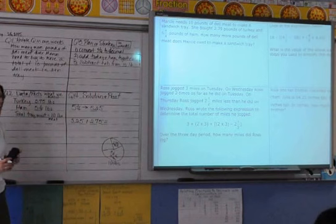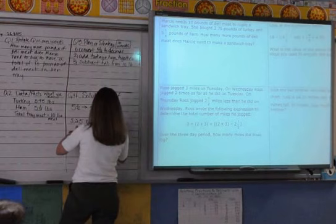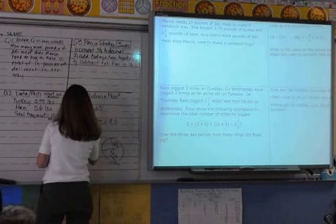8. 5 plus 2 is 7, plus 1 equals 8.0, and then what do I do next? 10 minus 8, and that equals 2 pounds.